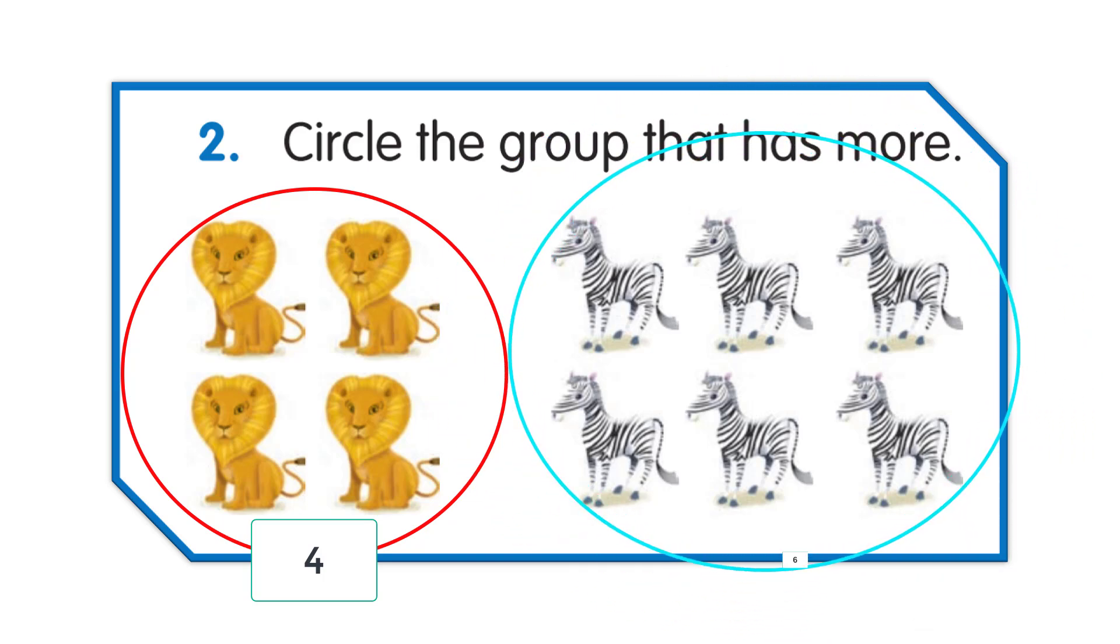The second group has 6 zebras. So, which is more? Yes, there are 6 zebras which is more than the number of lions.